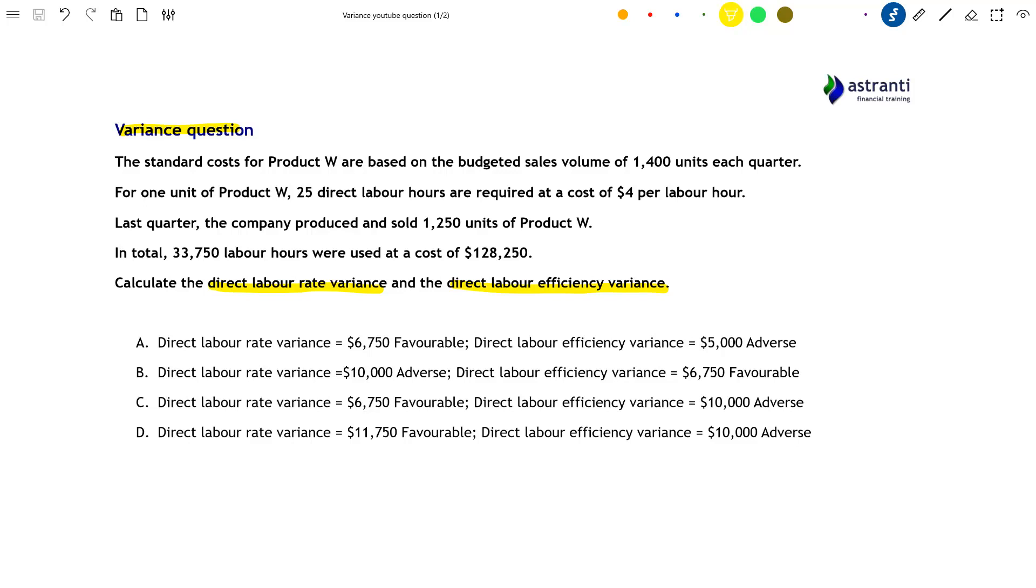Let's take a look at the question. The standard costs, meaning how much something should cost to produce based on your budget, for Product W are based on a budgeted sales volume of 1,400 units. For one unit of Product W, 25 direct labour hours are required at a cost of $4 per labour hour.